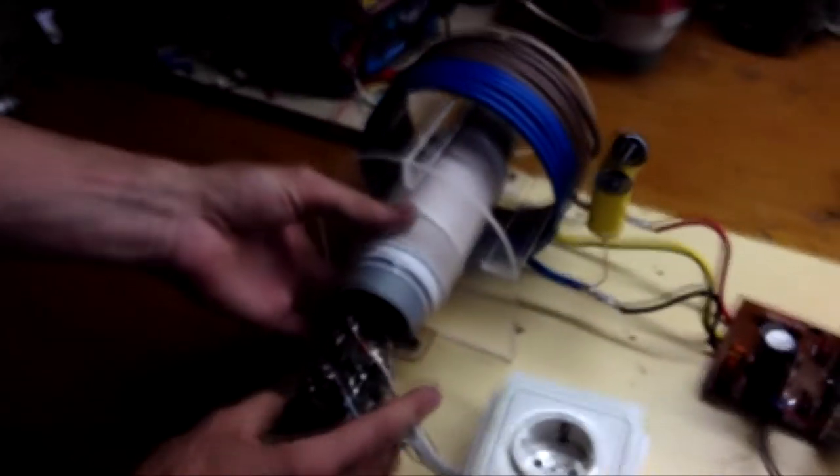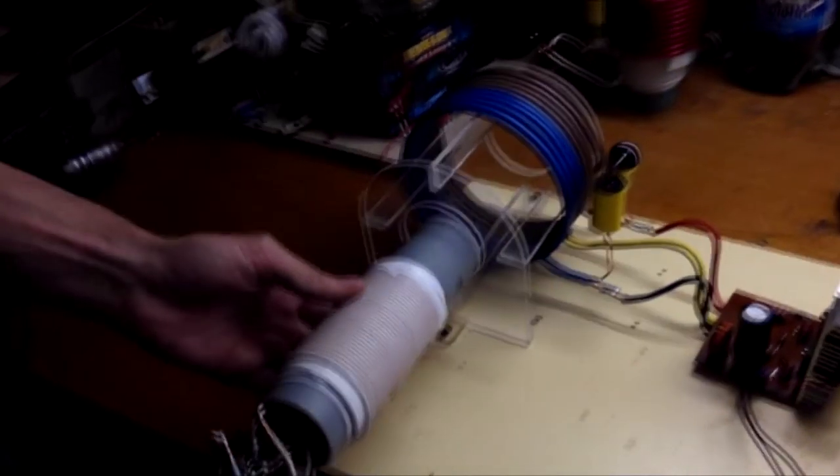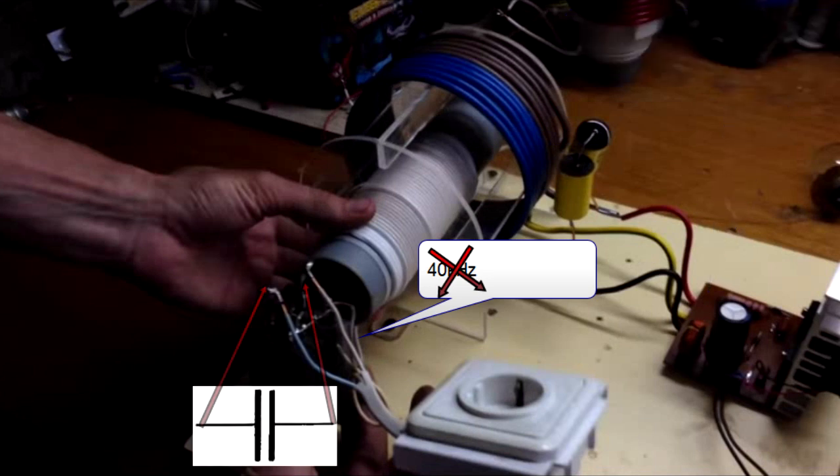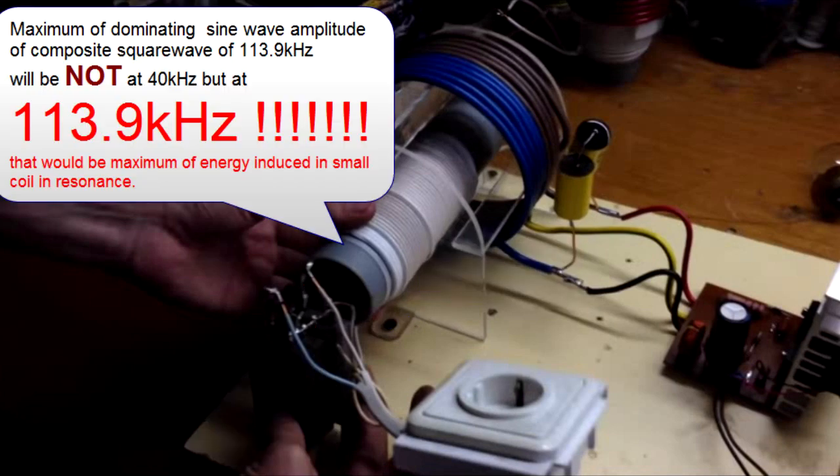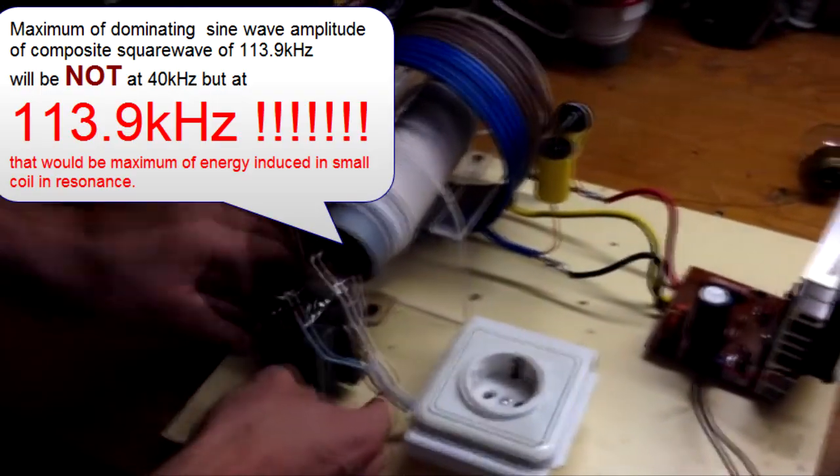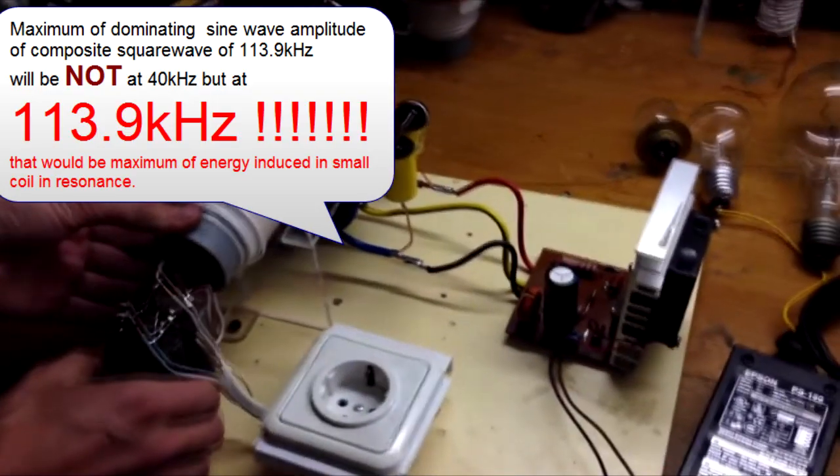This small coil that is inserted into the big coil is two and a half millimeter square gauge. And you see the bank of capacitor that is already soldered into the end of it in parallel.